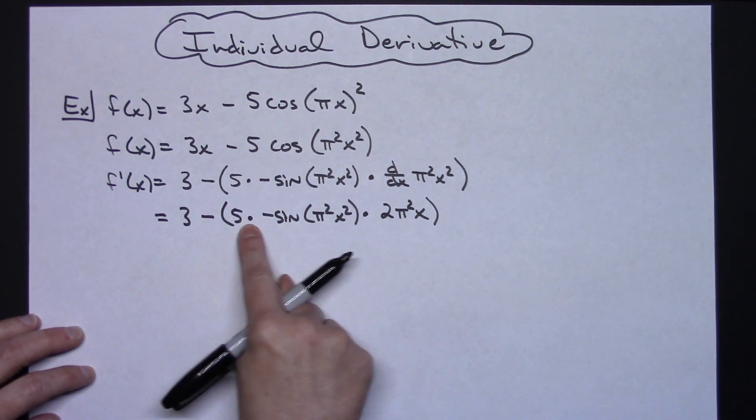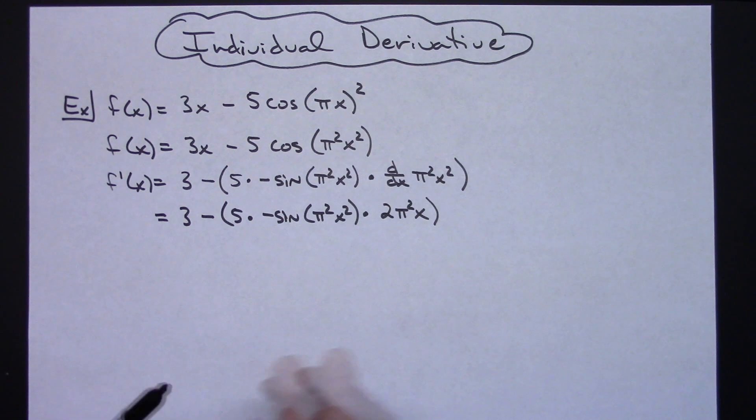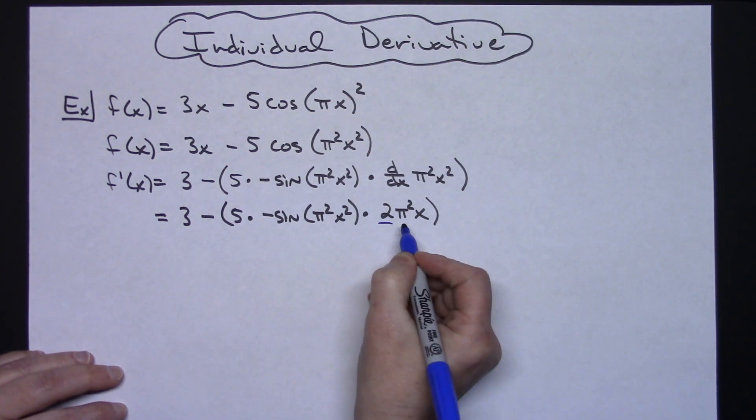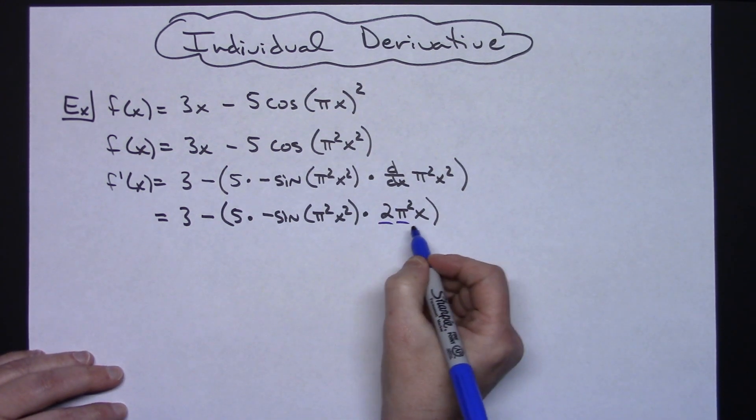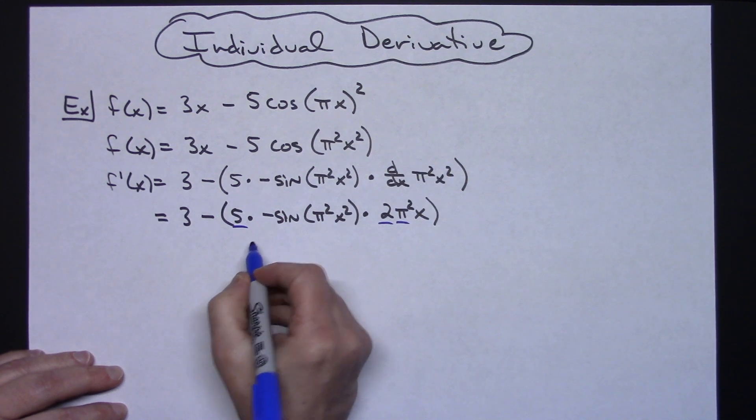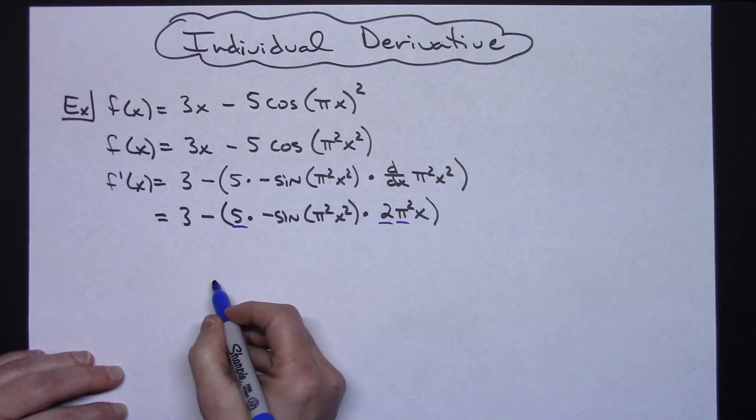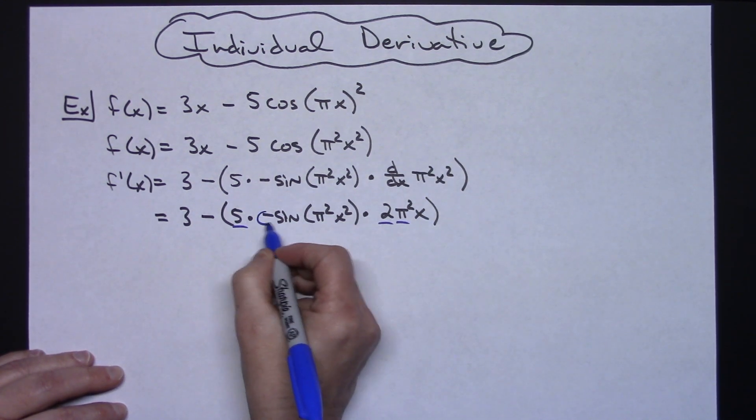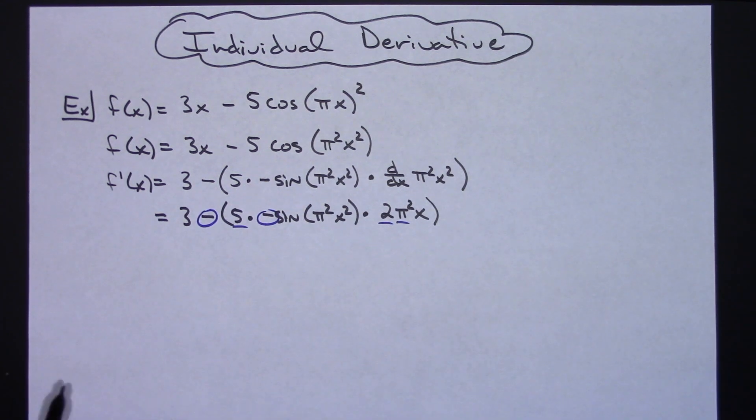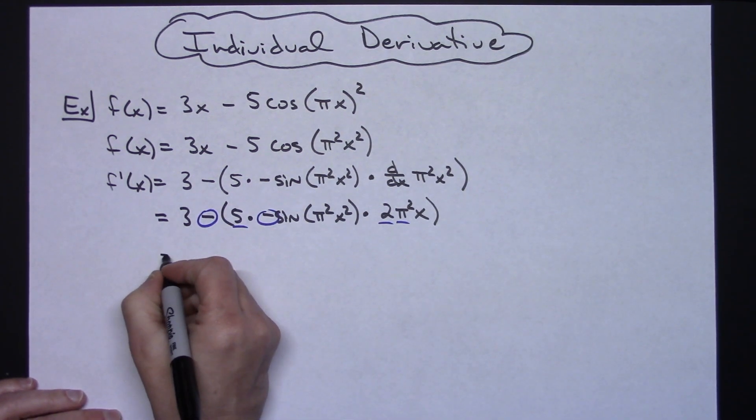Alright now I'm going to clean this up as much as I possibly can here. We've got a 2 and a pi squared and a 5. Alright which I can all pull out in front of this term and then we've got a minus and a minus right there which is going to make it go to a plus.